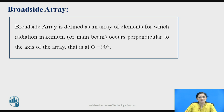Now, what is the broadside array antenna? It is considered as one type of an antenna array. Broadside array is defined as an array of elements for which radiation will maximally occur perpendicular to the axis of an array. That is, you are observing the main beam or the major lobe which is perpendicular to the axis of the array — that is, phi equals 90 degrees.